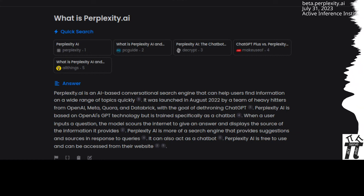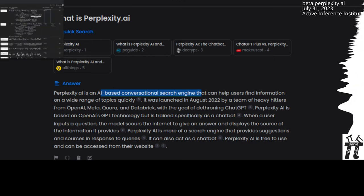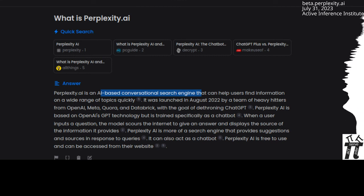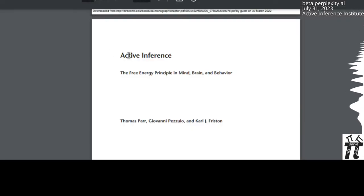It's July 31st, 2023. This is Daniel, and this video is going to be using Perplexity.ai, which is an AI-based conversational search engine, to learn and apply active inference. Pretty fun conversation that I just had with a lot of epistemic and pragmatic value.